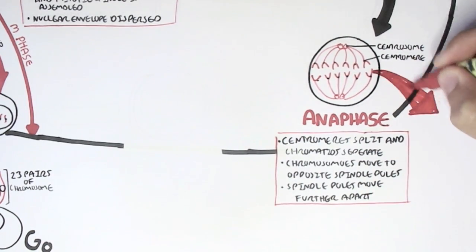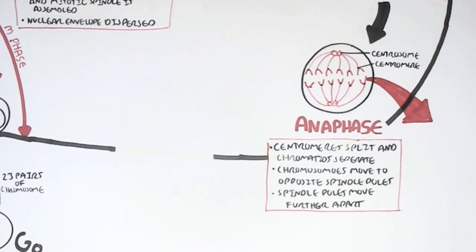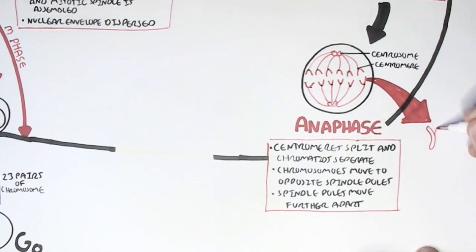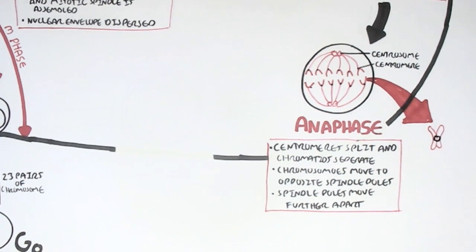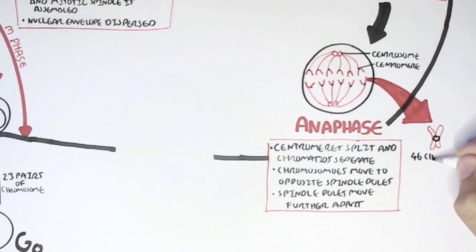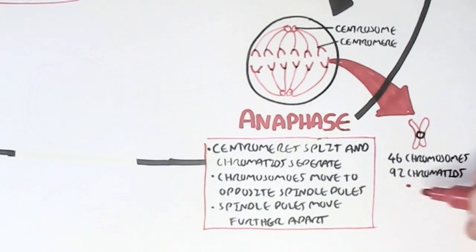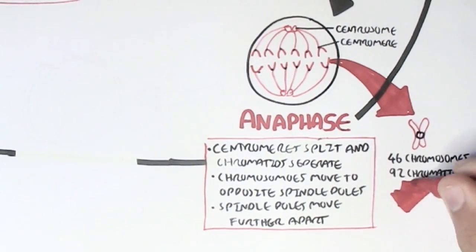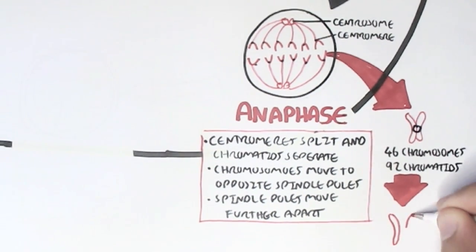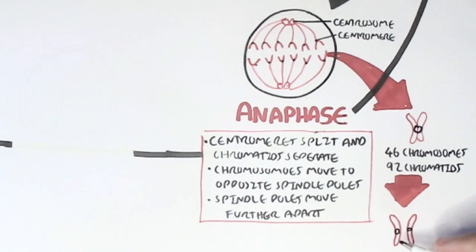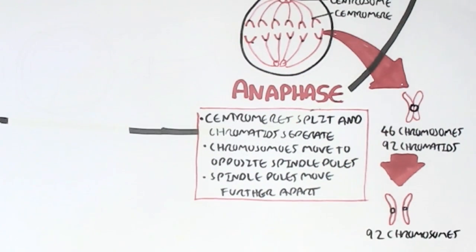Let's look at what happens with the genetic material during anaphase. Before anaphase, we had duplicated chromosomes — two chromatids per one chromosome — so in total 46 chromosomes and 92 chromatids. During anaphase, the microtubules with the centrosomes split this apart, forming two chromosomes each with one chromatid. Therefore, in total, we would see 92 chromosomes and 92 chromatids in this cell.